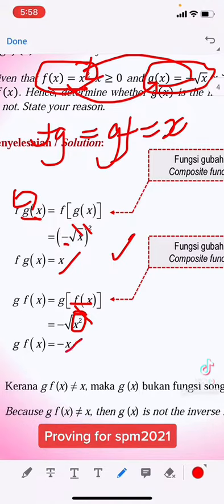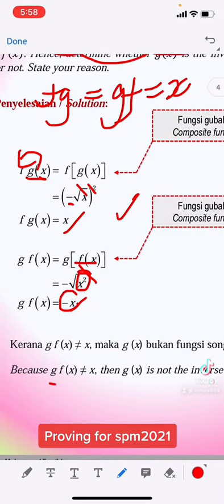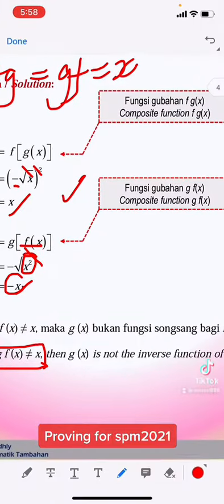still there, still negative. So it looks like we are not getting the positive x. So then we can say g(f(x)) is not equal to x.